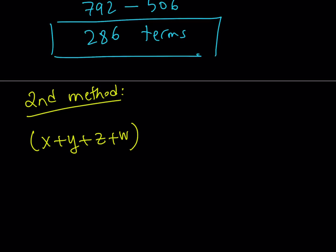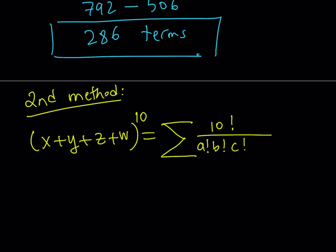I have four terms being added and I'm raising it to the 10th power. The terms that come from here are going to have a coefficient of 10 factorial divided by a factorial, b factorial, c factorial, and d factorial. We need four numbers that add up to 10 — for example 2, 2, 2, and 4 or any other arrangement — as long as a plus b plus c plus d equals 10. This is multiplied by x to the power a, y to the power b, z to the power c, and w to the power d. That's the multinomial theorem.